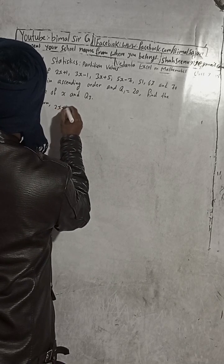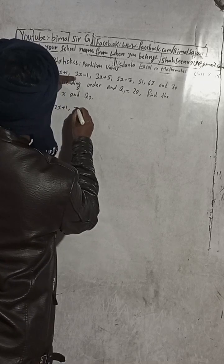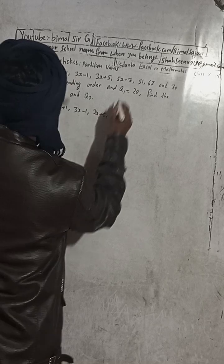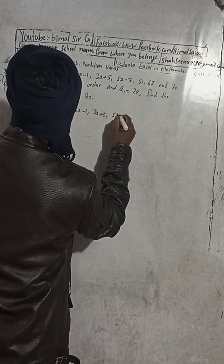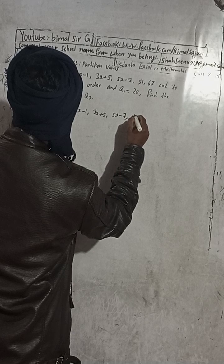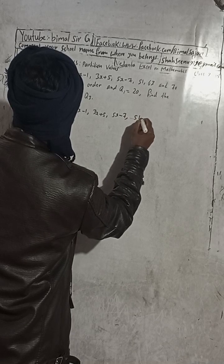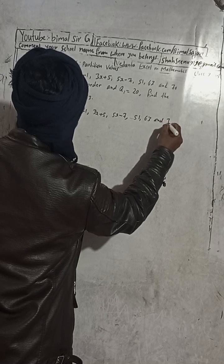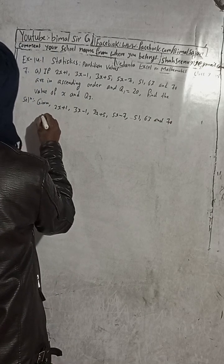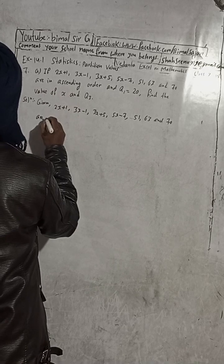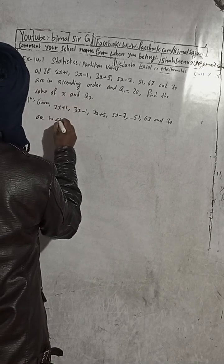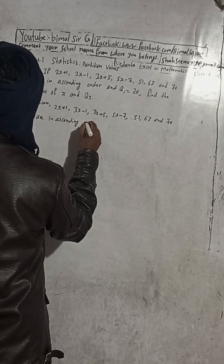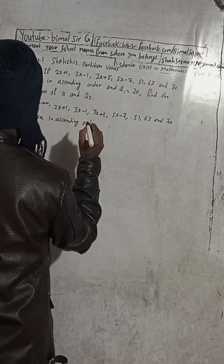So now we write here: Given — 2x+1, 3x-1, 3x+5, 5x-7, 51, 63, and 70 are in ascending order.